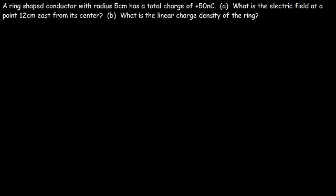A ring-shaped conductor with radius 5 centimeters has a total charge of 50 nanocoulombs. What is the electric field at a point 12 centimeters east from its center, and also what is the linear charge density of the ring? We're going to derive a formula and then use it to get the answer. Feel free to pause the video if you want to try it yourself.